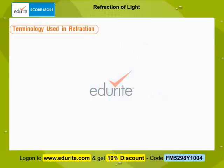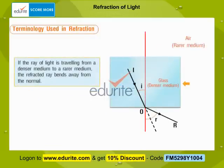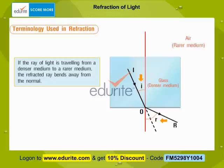If the ray of light is travelling from a denser medium to a rarer medium, the refracted ray bends away from the normal. Here, IO is the incident ray, OR is the refracted ray, I is the angle of incidence, and R is the angle of refraction. In this case, angle I is less than angle R.